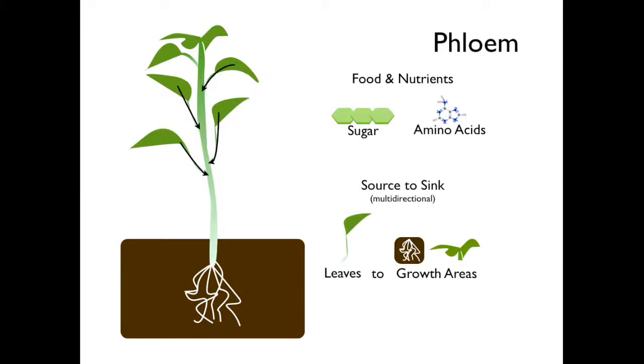Phloem transports food and nutrients, for example, sugar and amino acids. Phloem sap moves from source to sink, or from the leaves to areas of growth. Because phloem can move in multiple directions, it is called multidirectional.